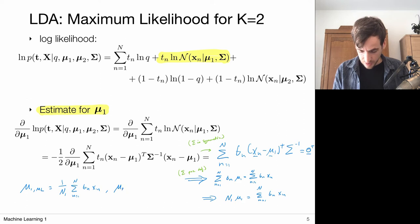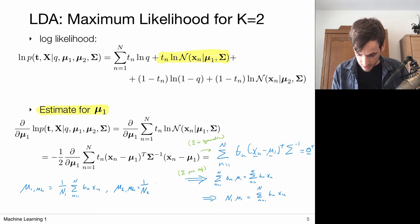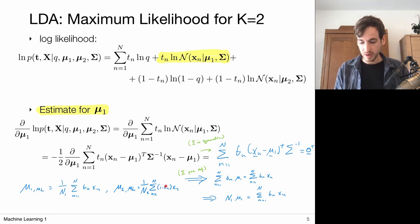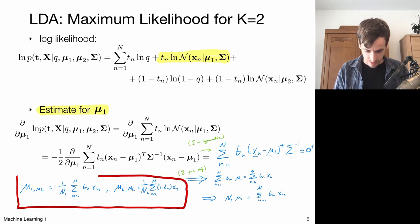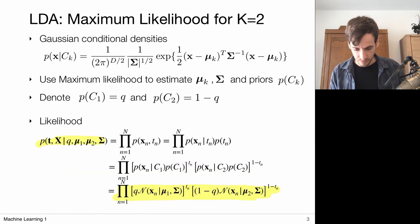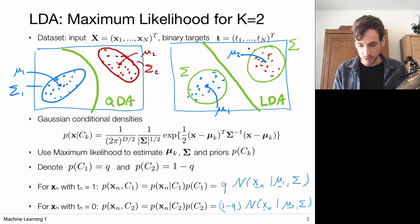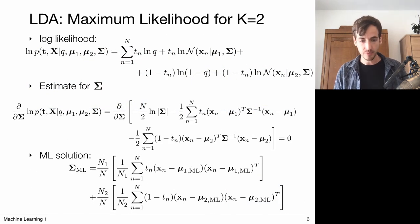By the same derivation, mu_2 is the sample mean over the points in class 2 — this term is active whenever t_n=0. So the mean for each class is simply the sample mean of the points within that class. We now have the maximum likelihood solutions for mu_1 and mu_2, and we can proceed to estimate the covariance matrix.